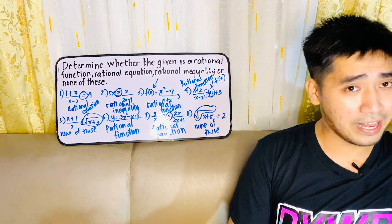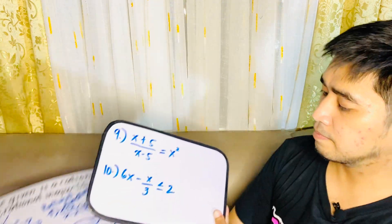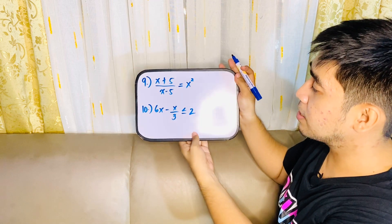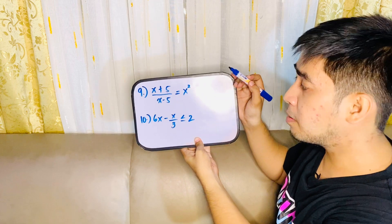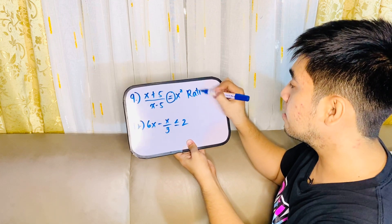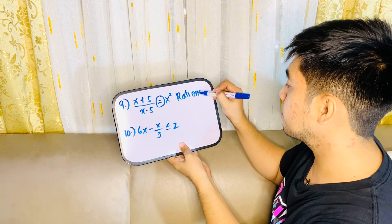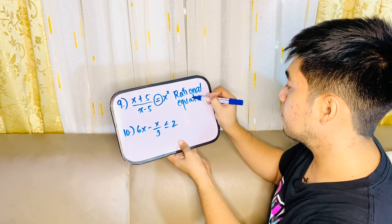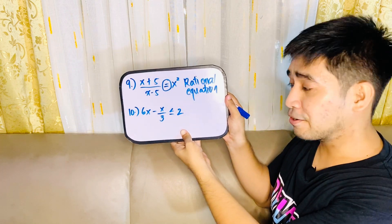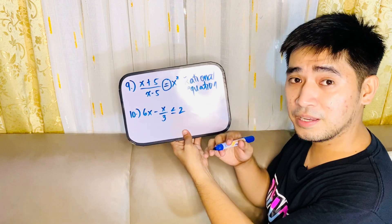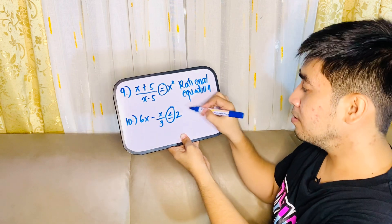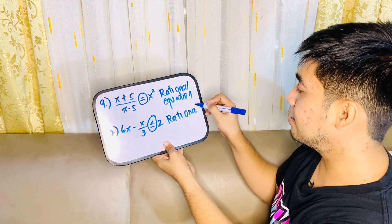For number nine, x plus 5 all over x minus 5 is equal to x squared. May iba pa bang variable? Wala na. Ano yung sign sa gitna niya? Equal. Therefore, this is a rational equation. And for the last one, 6x minus x over 3 is less than or equal to 2. Meron pa ba ibang variable? May radical ba? Wala. Therefore, this is less than or equal to — we'll be calling this a rational inequality.